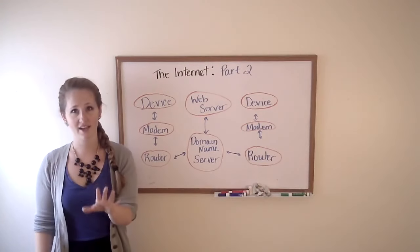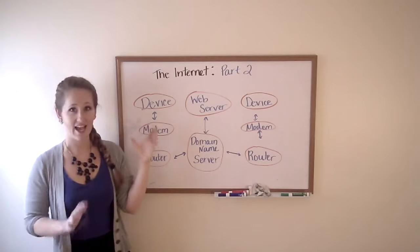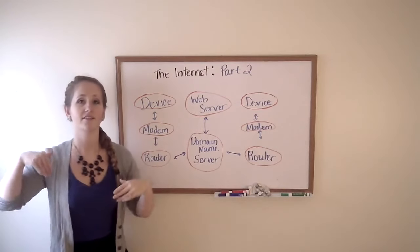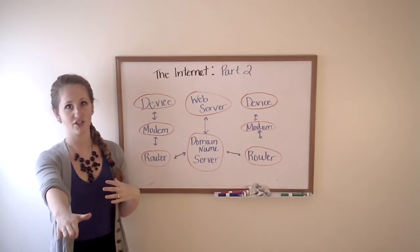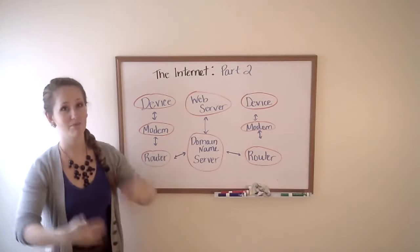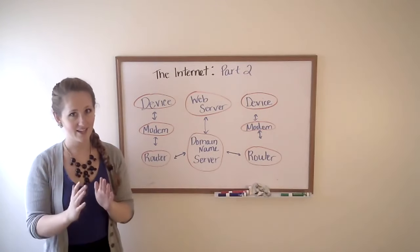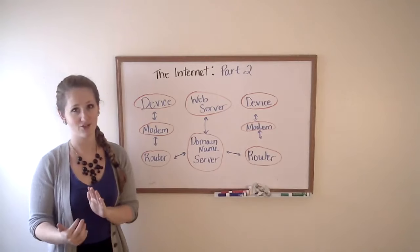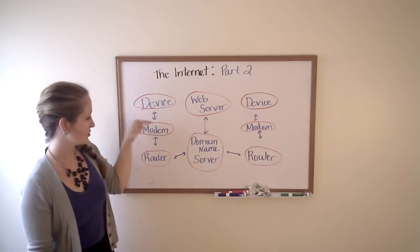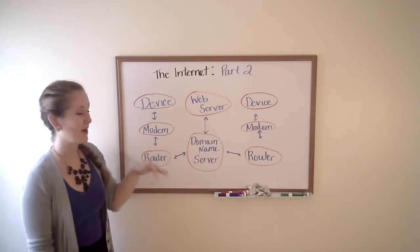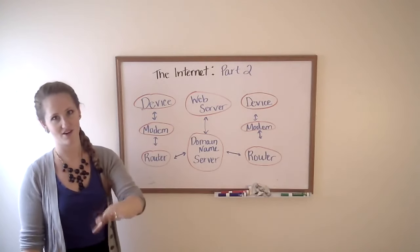Now what I want you to take away from this video is that your device, since it has its own IP address, can send out a request for information. That information is sent back to your device. The way it gets to your device is because of the IP address. And the way it gets there is through all the lines of the modems and routers and servers that make up the internet.